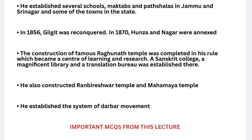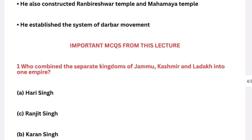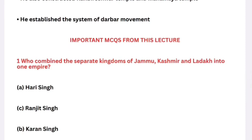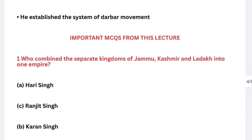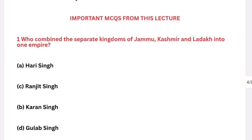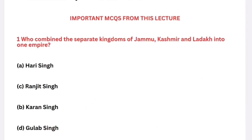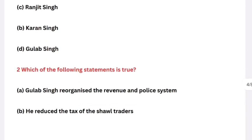Now for important MCQs. Question: Who united the separate kingdoms of Jammu, Kashmir, and Ladakh into one empire? Options: Hari Singh, Ranjit Singh, Karan Singh, Gulab Singh. The right answer is Gulab Singh — he was the one who first organized Jammu, Kashmir, and Ladakh into a single princely state.